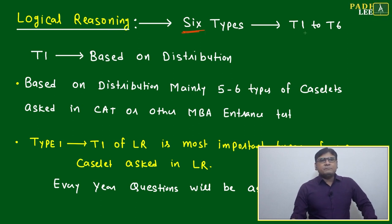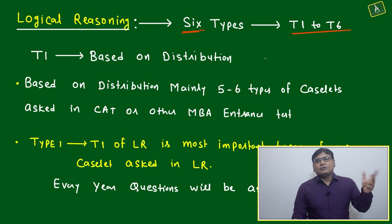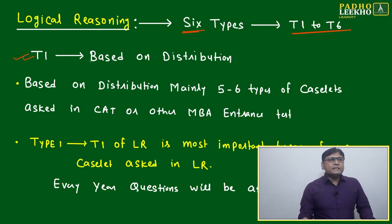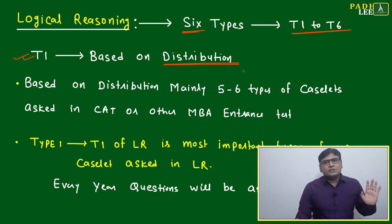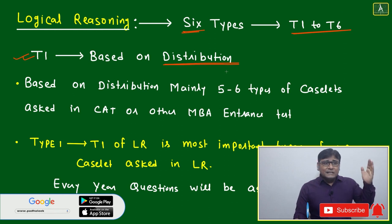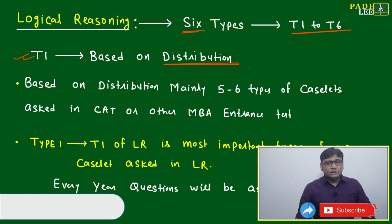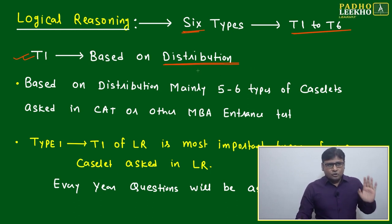Logical reasoning is divided into six types — type one to type six. These are the case sets generally asked in CAT or MBA entrance tests. T1 is the most important, based on distribution. If you understand T1 properly and make good attempts on T1 case sets, you will be able to solve at least one case set. You can check CAT 2020 slot one for reference.